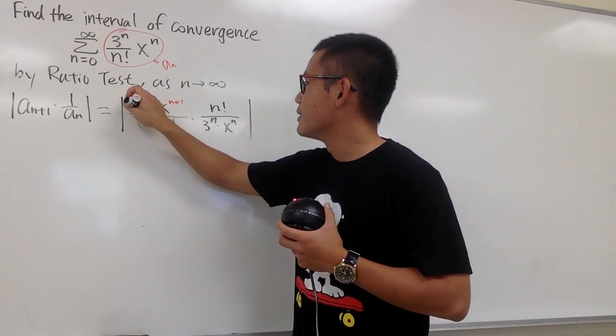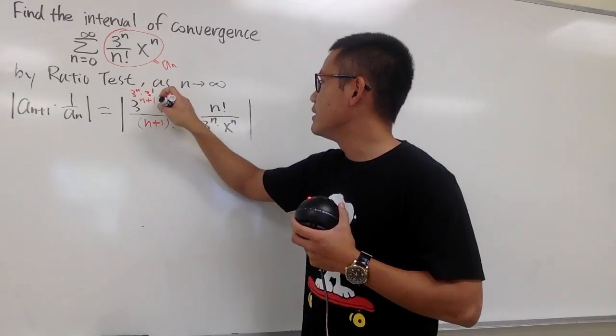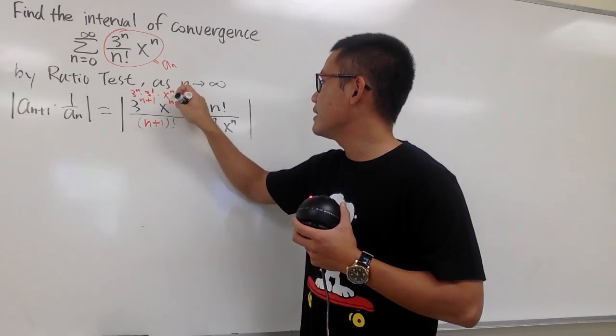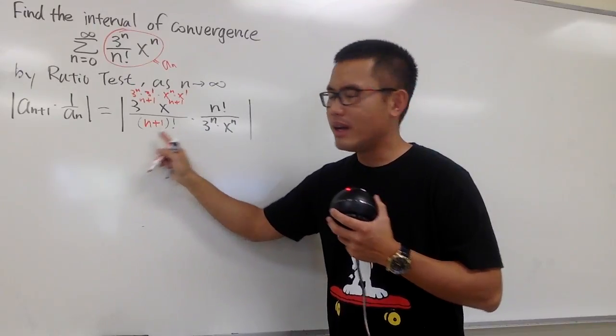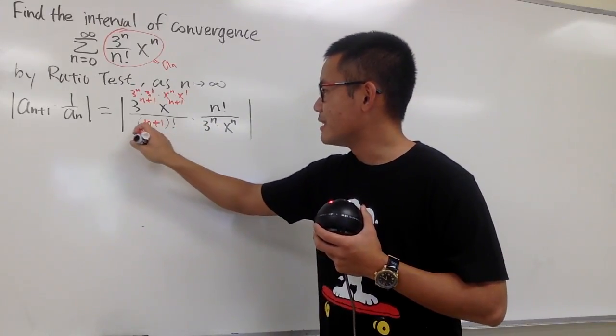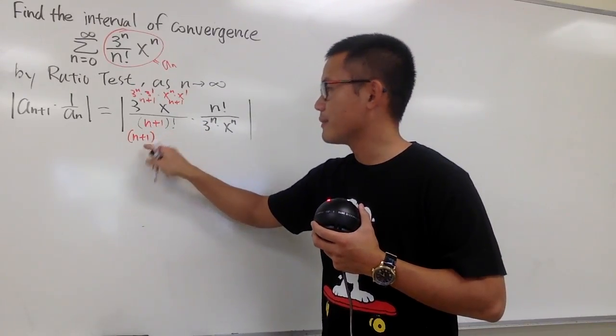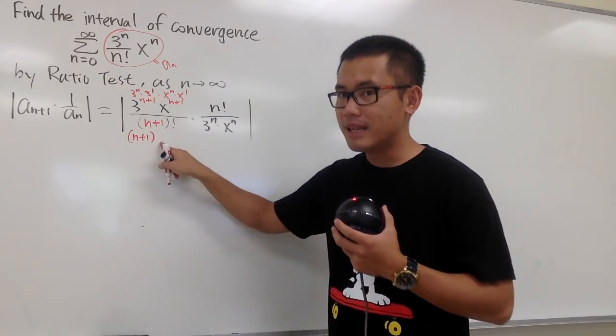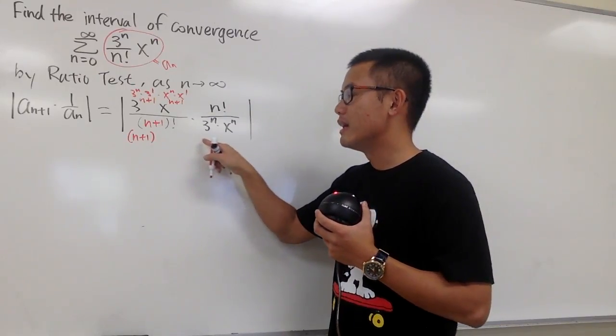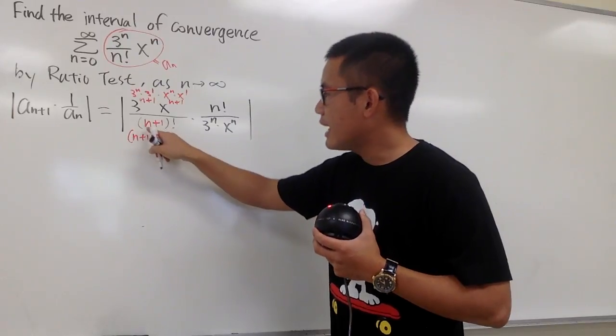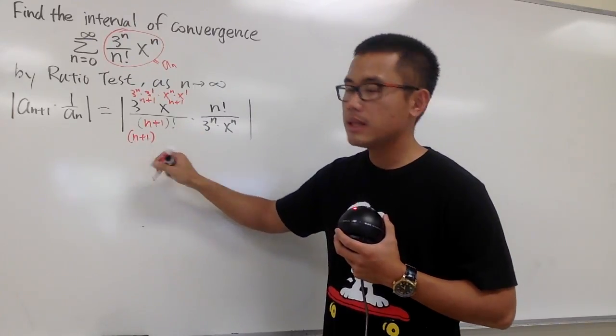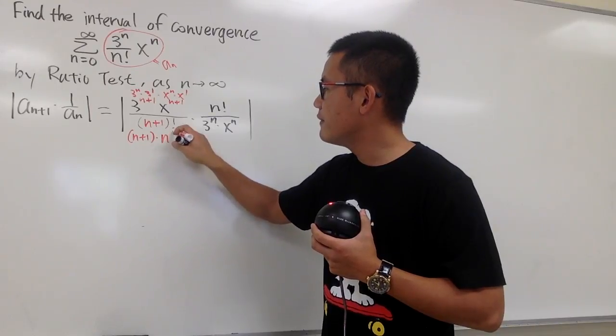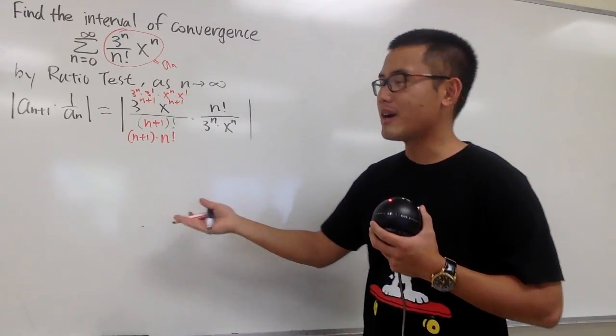Here we have 3^n times 3^1, and this is x^n times x^1. And let's also break down the (n+1) factorial. This is the same as saying n+1, and the next is going to be times n, and then times n-1, n-2, and so on. In another word, I can write (n+1) factorial as (n+1) times n factorial. That's the breakdown for this.